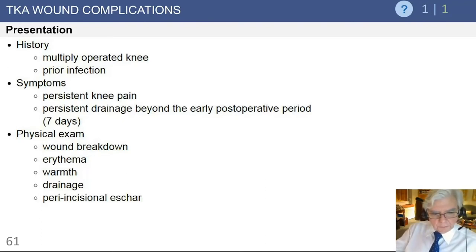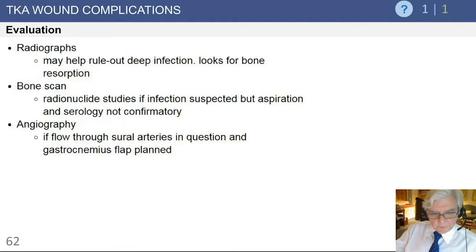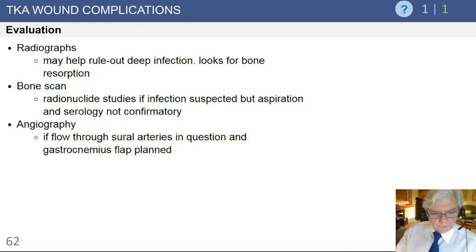On examination, wound problems present with wound breakdown, erythema, warmth, and drainage, as well as eschar in the peri-incisional area. Radiographs are useful, but with wound problems we focus on physical examination. Radionuclide studies have not been found to be particularly helpful. Aspiration is important to rule out deep infection if the wound becomes problematic. Angiography can also be performed to assess blood flow and determine if a gastrocnemius flap is necessary to provide coverage to a wound slough area.